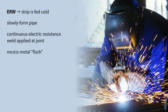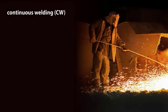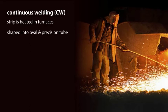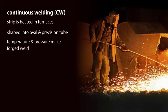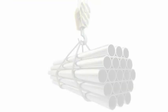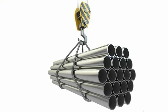Excess metal flash from the welding process and the pressure of the two pieces being pushed together is removed with a special cutter. In the continuous welding (CW) process, the strip is first heated in furnaces and then shaped into an oval and precision tube, just as in the ERW process. The difference is that the temperature and pressure make a forged weld.